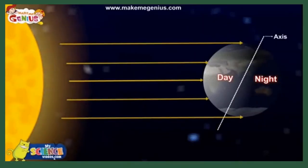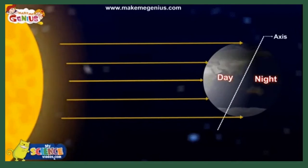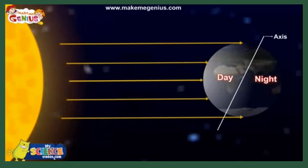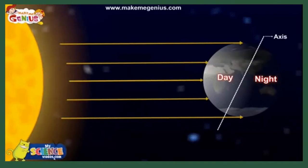Children, as you learned, rotation of Earth causes day and night. At a time, only one side of the Earth faces the sun and gets light from the sun — thus there is daytime on this side. The other side of the Earth, which is away from the sun, does not get heat and light from the sun, so there is darkness — that is, it has night on this side.